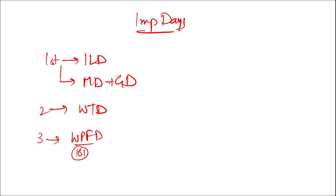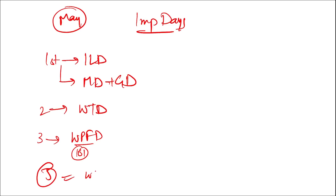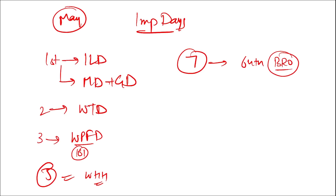Important days in May: 1st May — International Labour Day, Maharashtra Day, Gujarat Day; 2nd May — World Tuna Day; 3rd May — World Press Freedom Day; 2nd May — World Asthma Day; 4th May — Coal Miners Day and International Firefighters Day; 5th May — World Portuguese Language Day, World Hand Hygiene Day, Buddha Purnima, International Day of the Midwife; 7th May — 64th edition of Border Roads Organisation (BRO) Day.